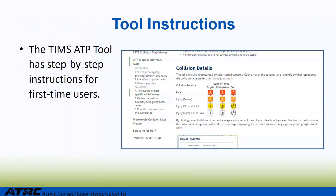Tool instructions. The ATP TIMS tool has very detailed step-by-step instructions for first-time users. The TIMS instructions have an index on the left that shows the different tools and then the different elements in the tool. As you can see in this screenshot, we are in the ATP maps and summary tool, and we are on step six. On the right, you can see more detailed instructions that the user needs to know as they complete step four.